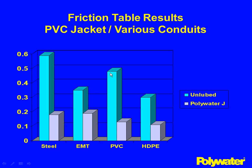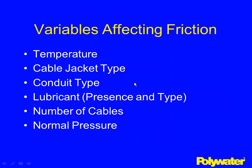Keep in mind that unlubricated values represent crews not using enough cable pulling lubricant. It is very important that you specify Polywater lubricants every time people are pulling cable. If they don't use lubricant, the numbers become much higher — even small differences in coefficients of friction will make big differences in ending tensions.